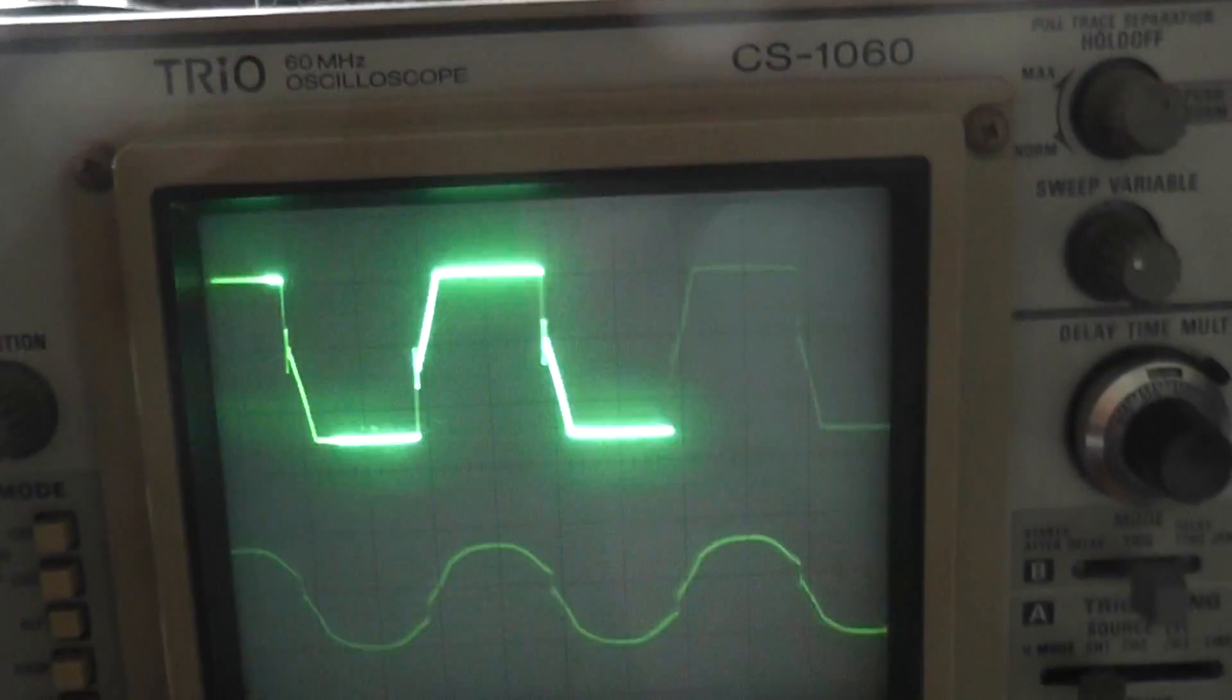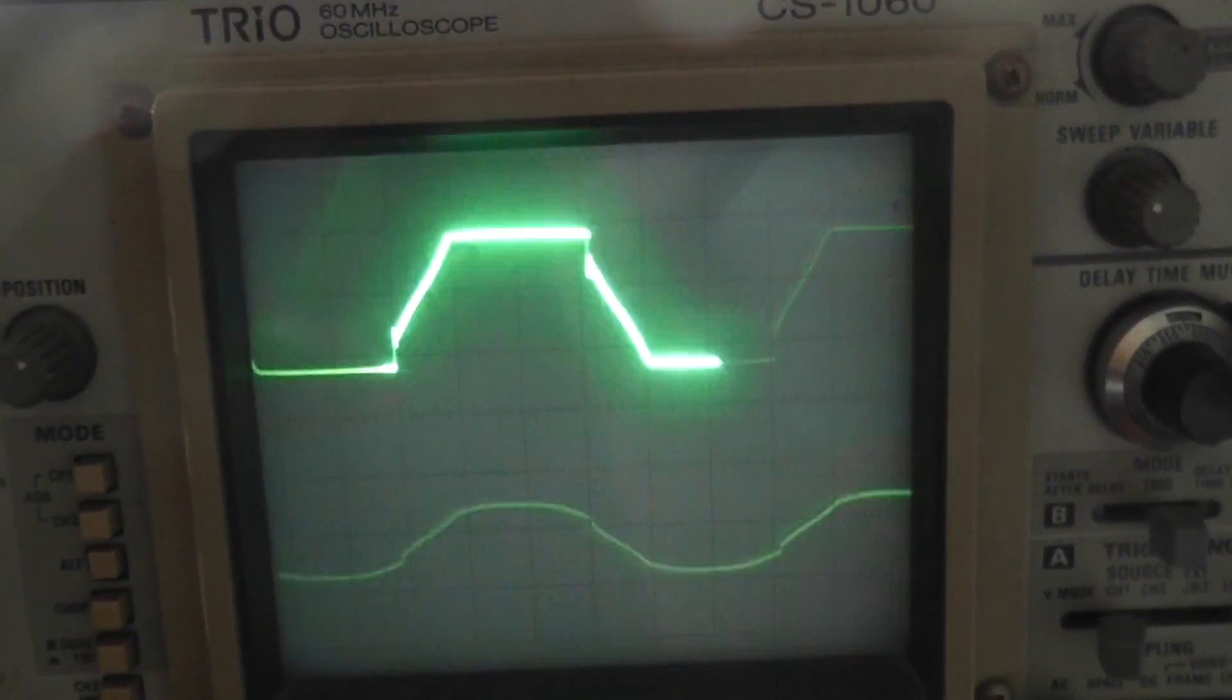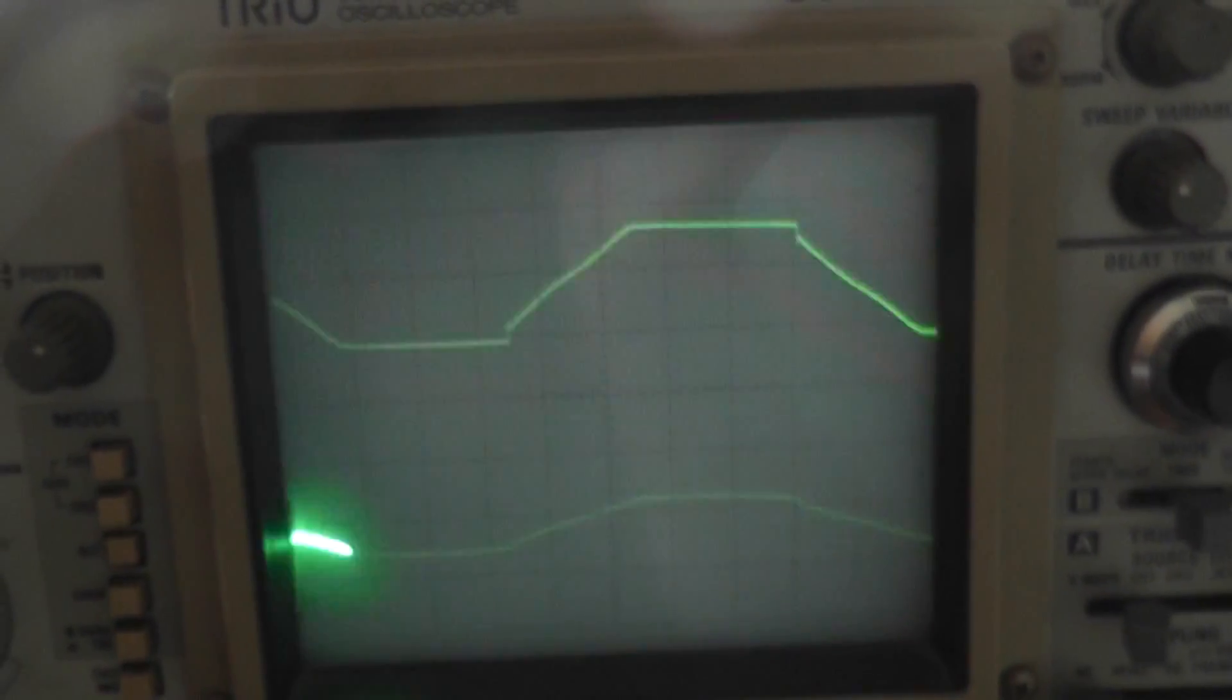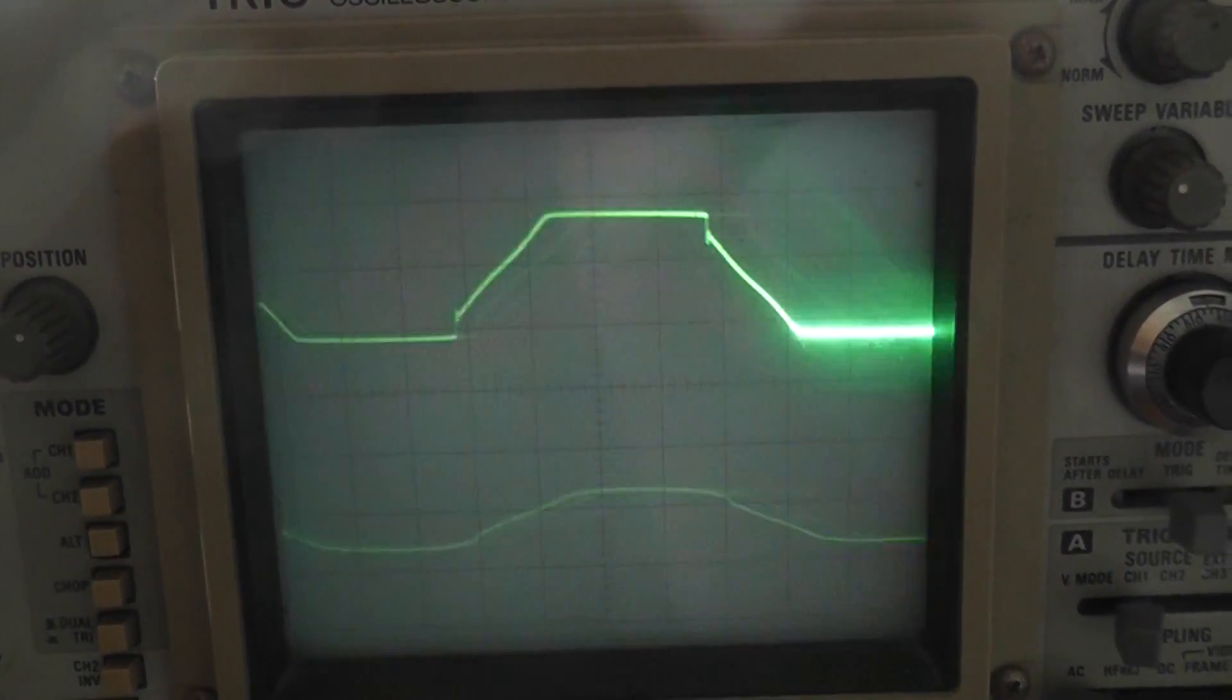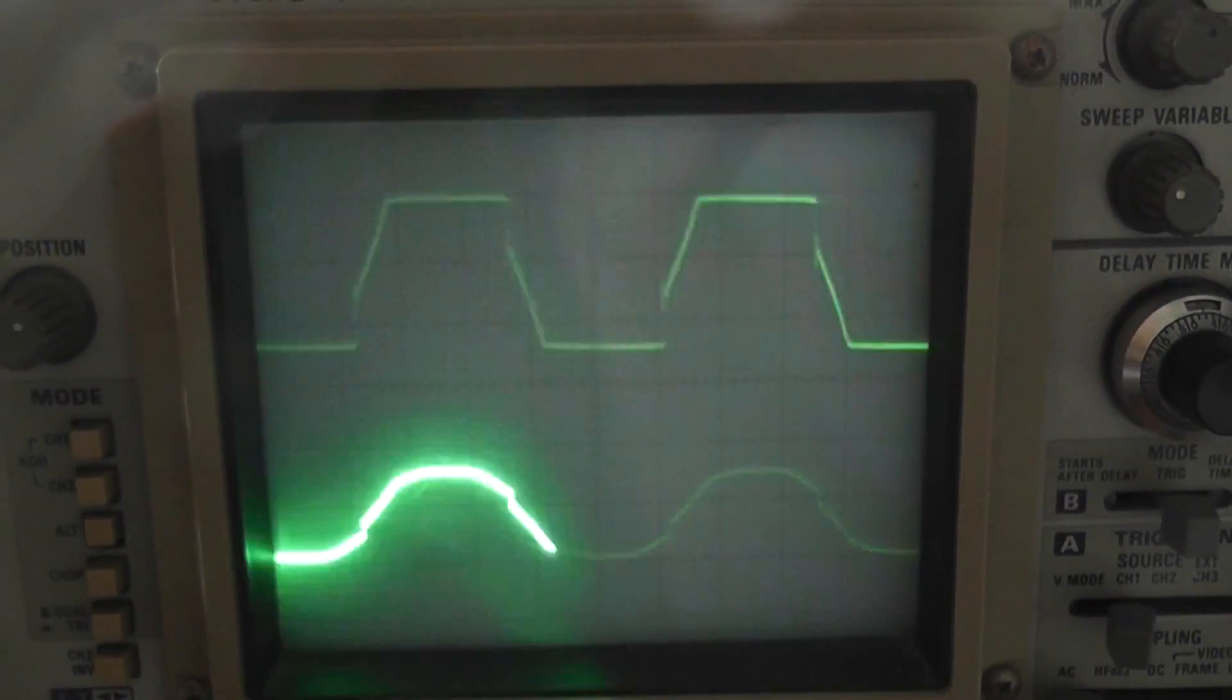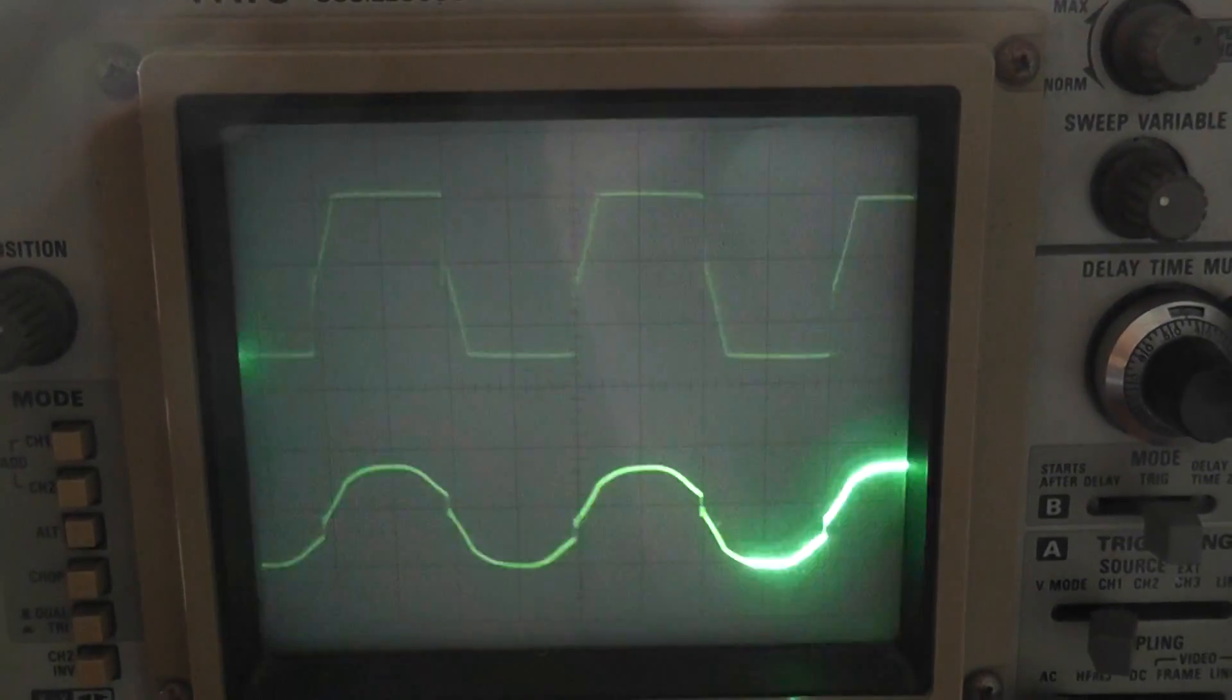Go back to the oscilloscope. I'll see what happens when we slow the thing down. The voltage output decreases. There's less flux created.